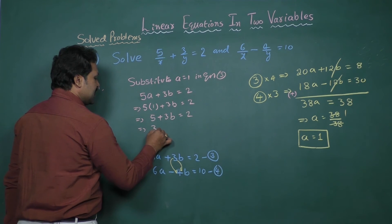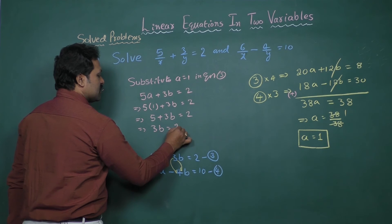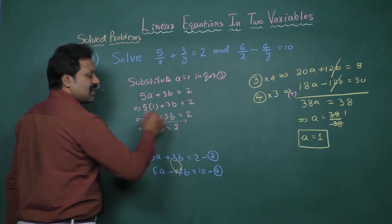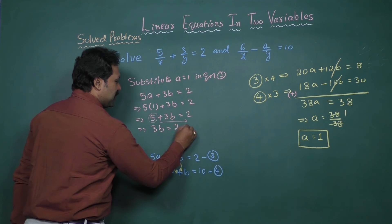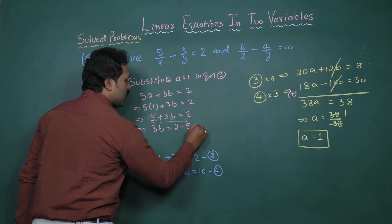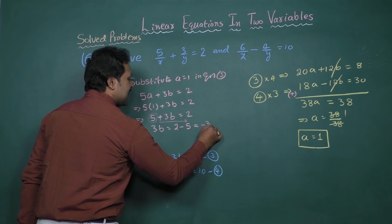That implies 3b equal to 2. If you transfer plus 5 to the right-hand side, it becomes minus 5. So 2 minus 5 is minus 3.